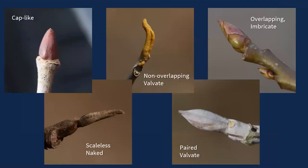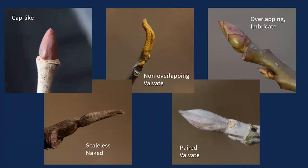Buds in general are often covered in scales, and you want to look at the characteristics of those buds — the overall size, the shape, whether they're blunt or pointed, swollen or smaller than the twig. Some have a cone or cap-like scale covering the entire bud. Some have overlapping scales like shingles — we call those imbricate buds, with multiple overlapping scales. That's probably the most common type. Then we have valvate buds, where scales don't overlap like shingles but may meet up against each other — paired valvate — or simply cover the bud without overlapping, sometimes called naked buds.